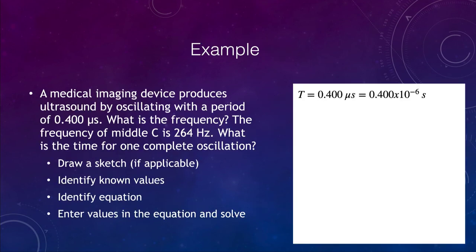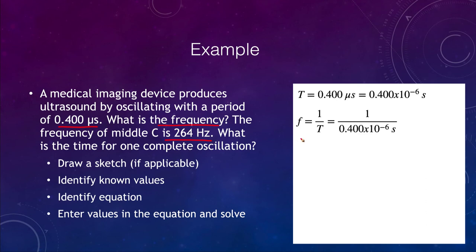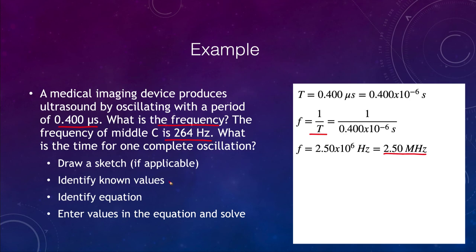Let's look at an example. An ultrasound is oscillating with a period of 0.4 microseconds and we want to find the frequency. We're given the period of 0.4 times 10 to the negative 6 seconds. The frequency equals 1 divided by the period, so 1 divided by 0.4 times 10 to the negative 6, which gives 2.5 times 10 to the sixth hertz. That is 2.5 megahertz — the frequency of the ultrasound oscillation.